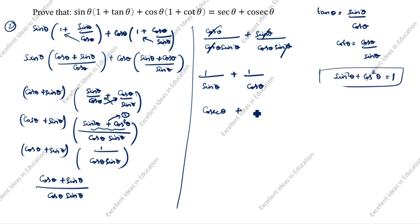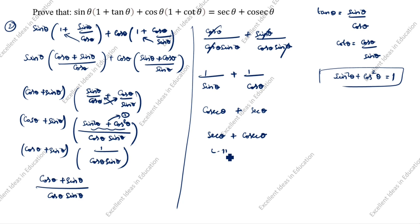1 by cos θ is sec θ. We rearrange as per the question: sec θ + cosec θ. LHS = RHS, hence proved. Which one is easiest for you, you can follow. Thanks for watching this video.